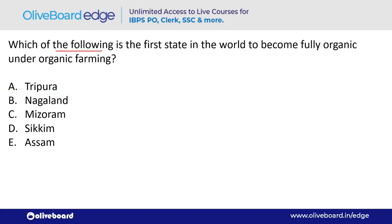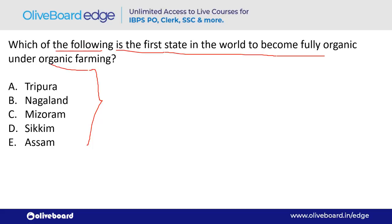Which is the first state in the world to become fully organic under organic farming? The answer is Sikkim — option D.